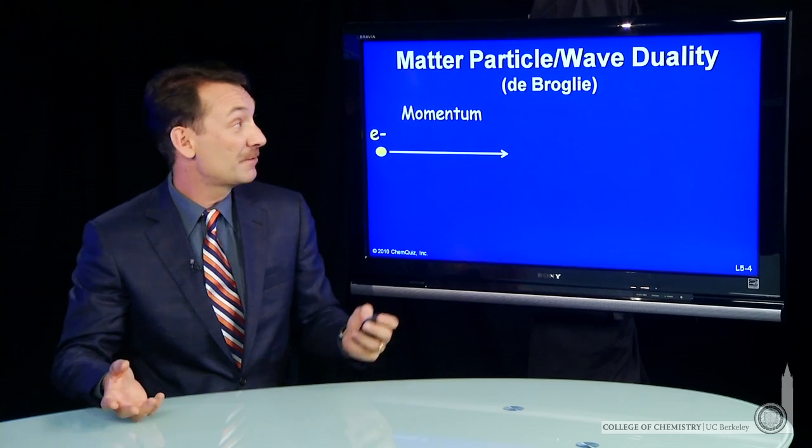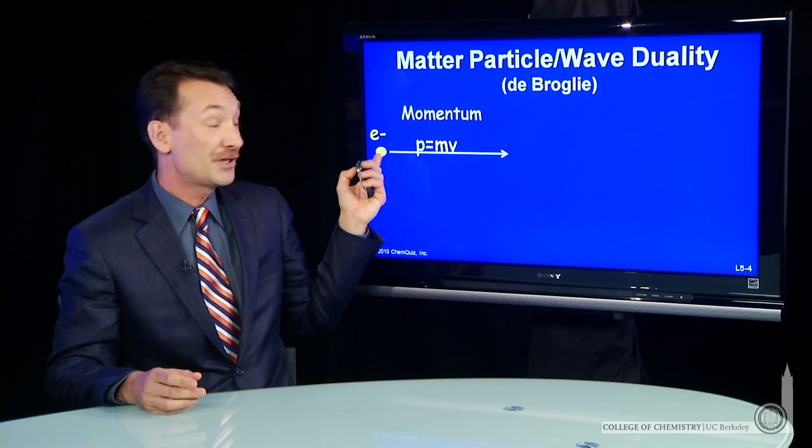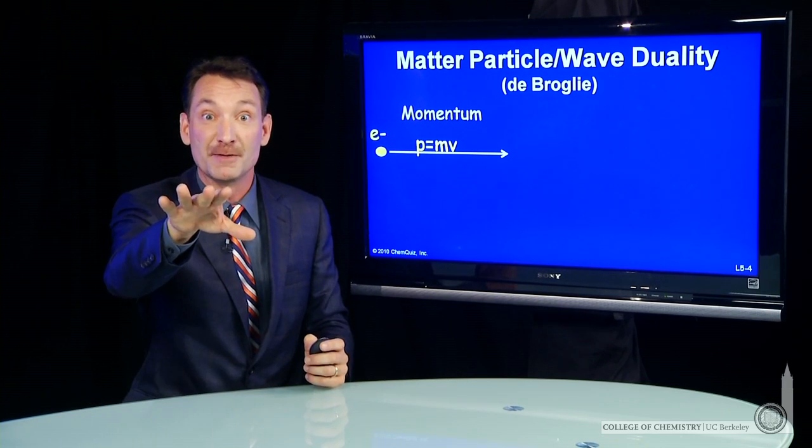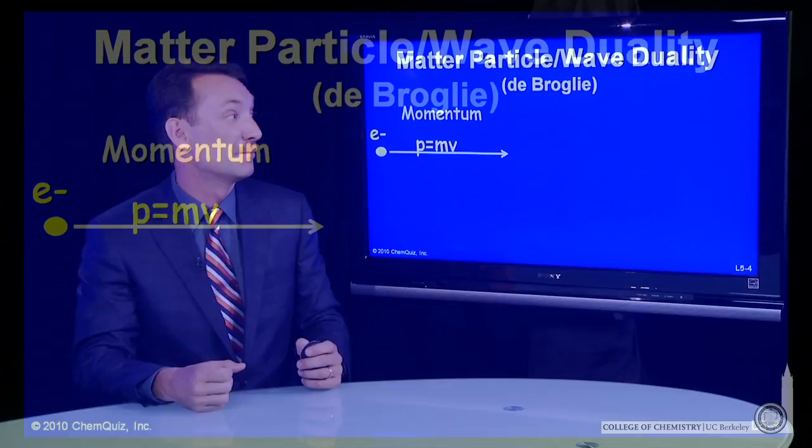Well, we would define it in the same kind of way. We would say a particle has a momentum. And electrons, for instance, they can move, and they'll be moving at a certain velocity. You take the product of their mass and velocity, that's a momentum.